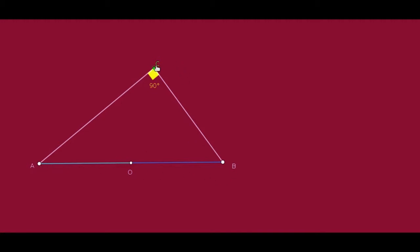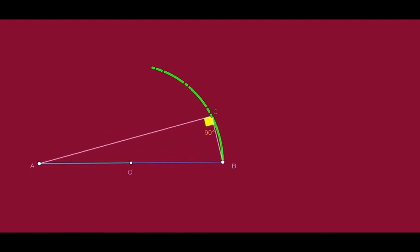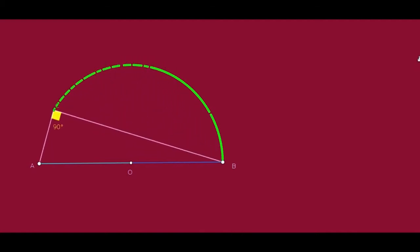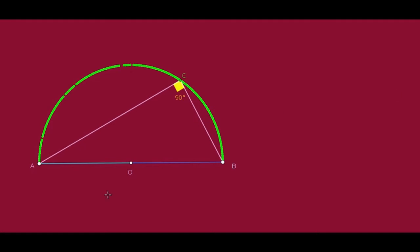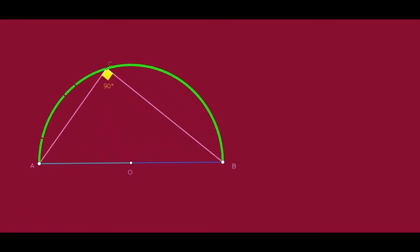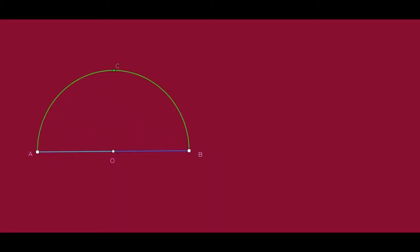In triangle ABC, AB is the hypotenuse and angle C is 90 degrees. Here we take a point C on a semicircle and move the point. We learn about a semicircle. This is a semi-circle.